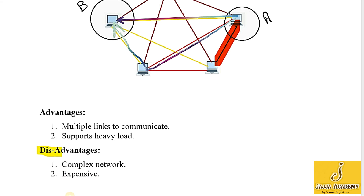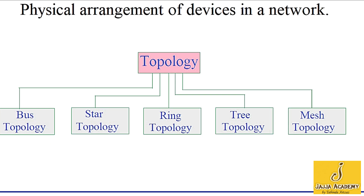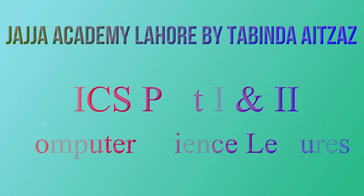Now let's discuss disadvantages. A mesh network is a very complex network — there are many paths and many wires that make it very complex. This network is also very expensive, as many wires are used to connect one device with all other devices. That was all about network topology. Thank you for watching.